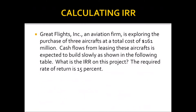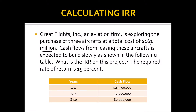Let's look at an IRR example. Great Flights is an aviation firm exploring the purchase of three aircraft costing a total of $161 million. Cash flows from leasing these aircraft are expected to build slowly as shown in the table. What is the internal rate of return? The required rate of return is 15%. We solve for the discount rate that forces NPV to zero, then compare it to that required rate.